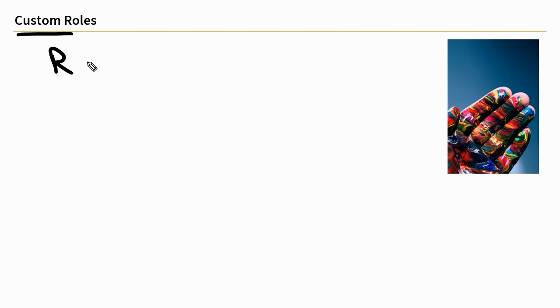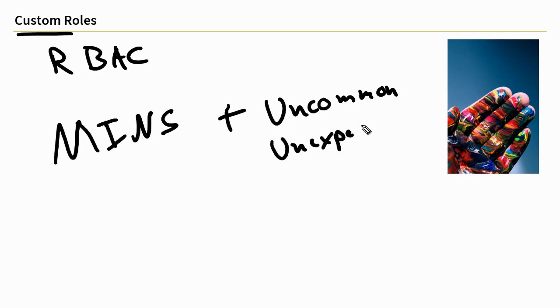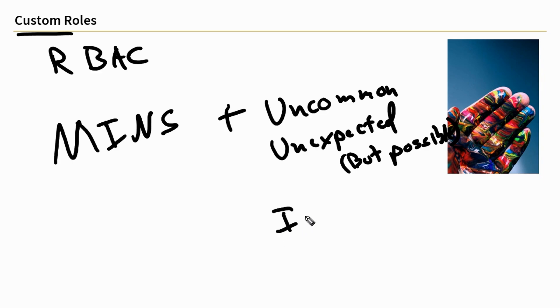Once we consider what the ideal role is, we're going to want to build a custom PIMR role, and we're going to want to have that based around not only the minimums, but also the uncommon, the unexpected but possible, and the inconsistent — as in something that's not required very often, but it's hard to predict when exactly that requirement is going to pop up.